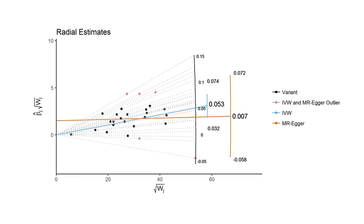We can see the weighting attributed to each genetic variant by looking at its place on the x-axis, and the x-axis will always be positive regardless of how our alleles are coded. Perhaps more importantly, the distance of each observation from the regression line is now proportional to the square-root contribution for that genetic variant towards global heterogeneity. That means we can identify our most substantial outliers by simply considering their distance from a given regression line.